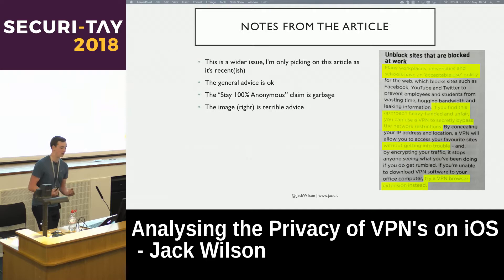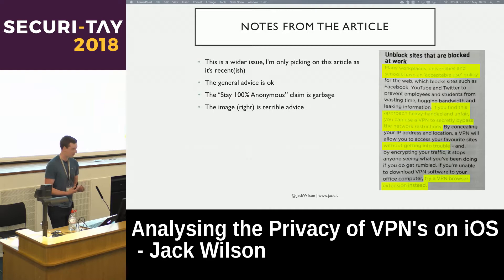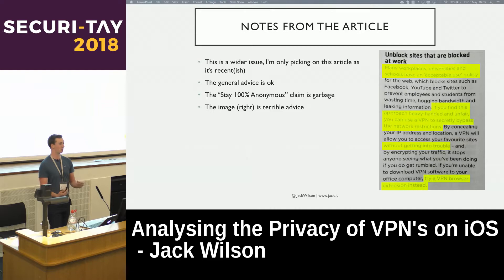There are a couple of notes from that article. The advice was generally okay — explaining what a VPN is, why you should use it, why you shouldn't — but the 'stay 100% anonymous' claim is garbage. The article was also saying that workplaces have an acceptable usage policy and you can use a VPN to mitigate this and access content you might not be able to. It claimed you won't get in trouble because the VPN hides your traffic, but you're still going to get in trouble for breaching your acceptable use policy.